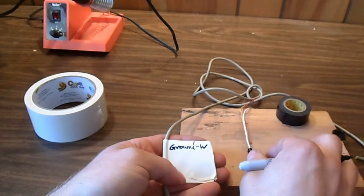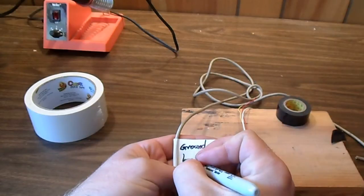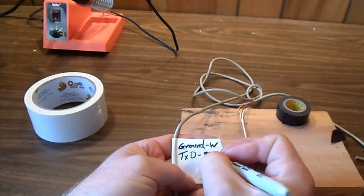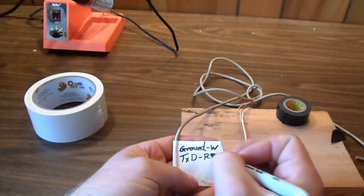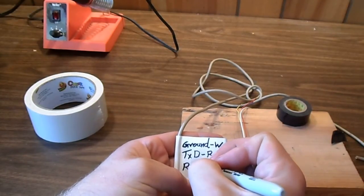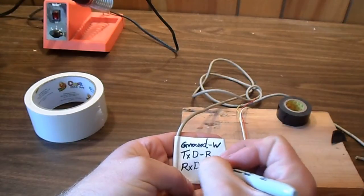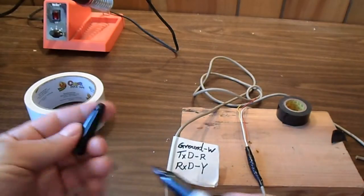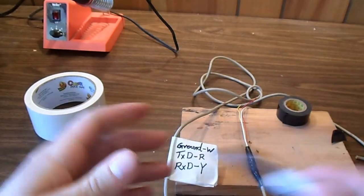And red for the transmitting TXD. And the receiving, the RXD, was yellow. Now we won't forget later on.